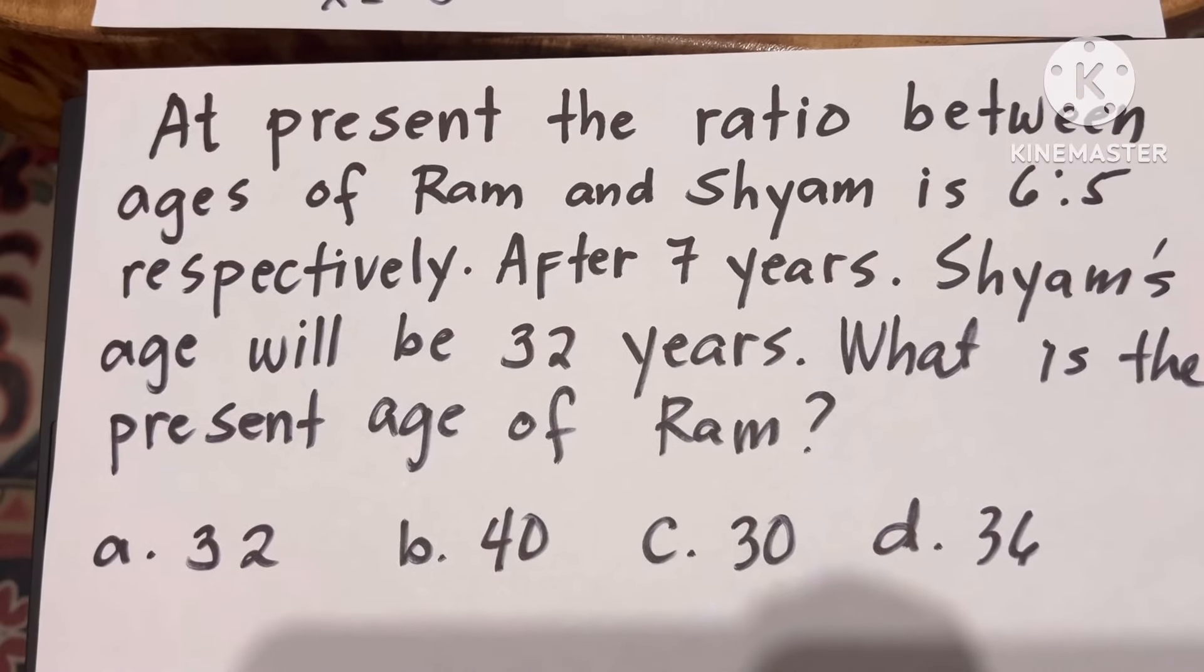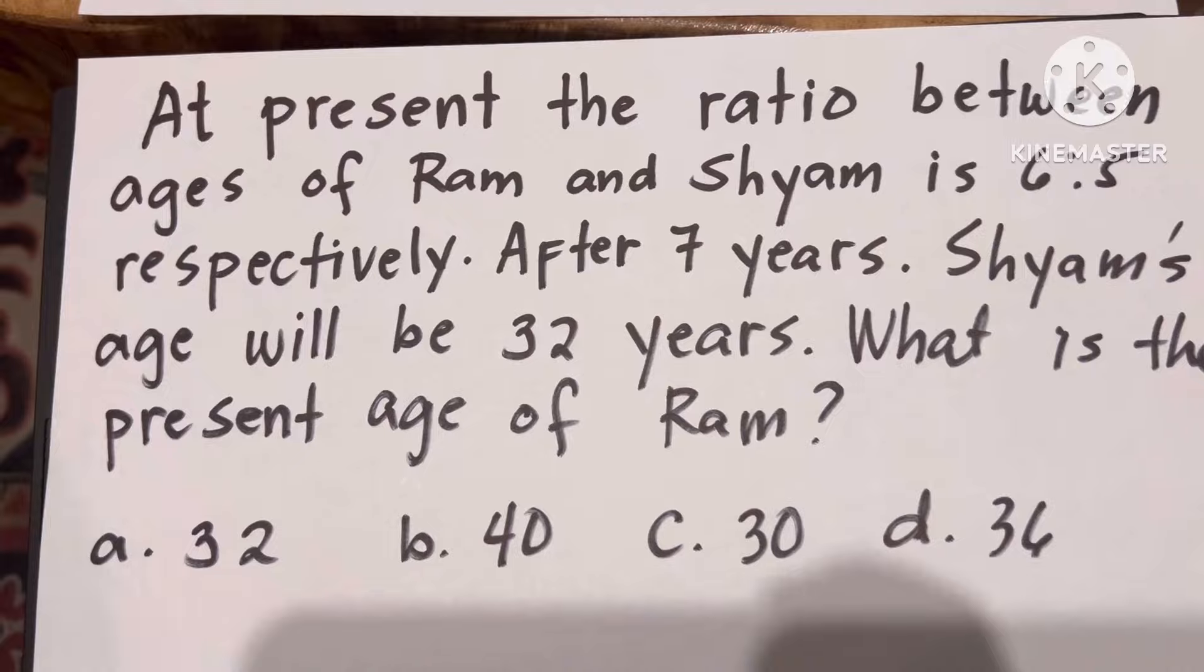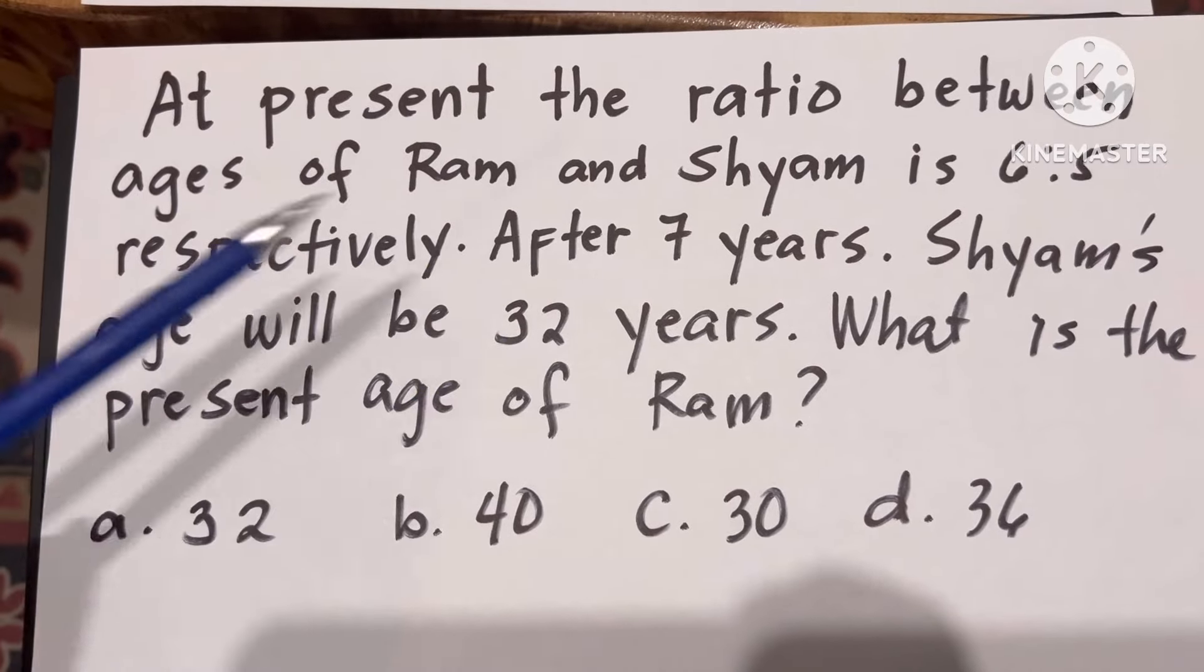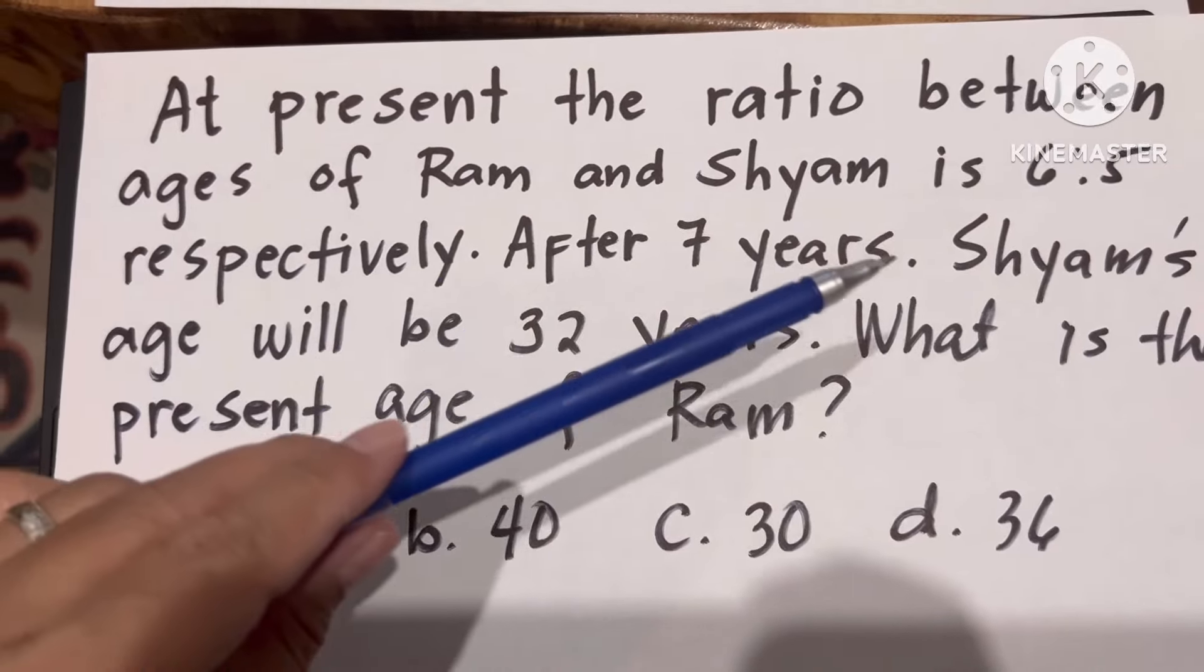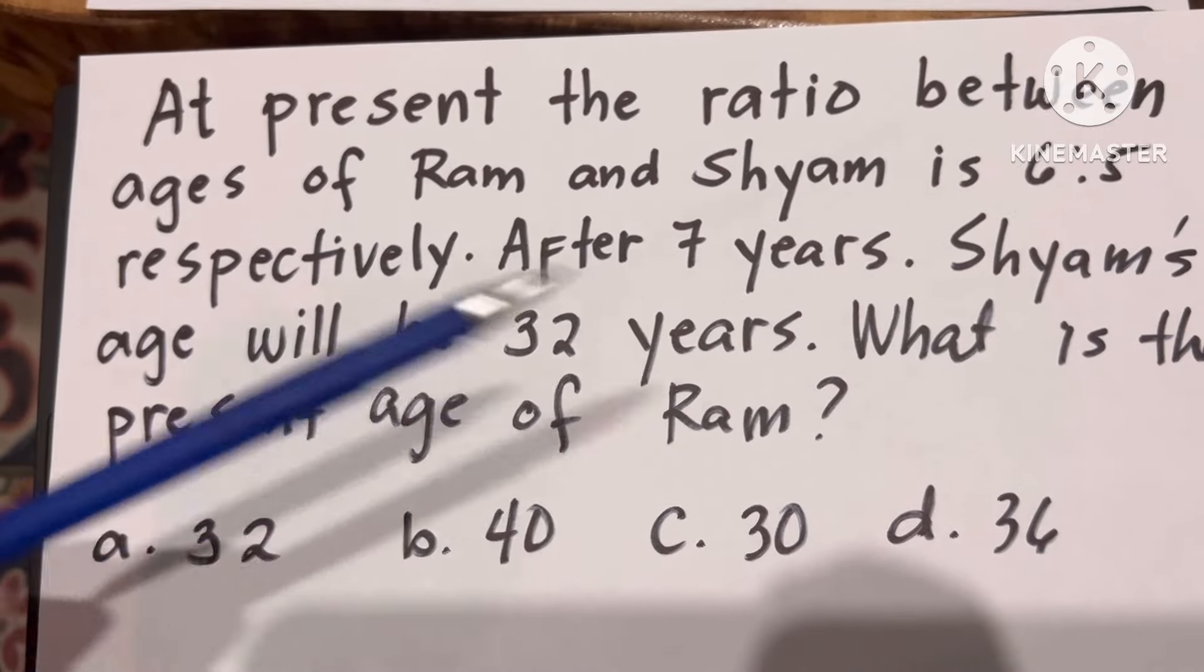So let us analyze the problem. At present, the ratio between ages of Ram and Shyam is 6 to 5 respectively.